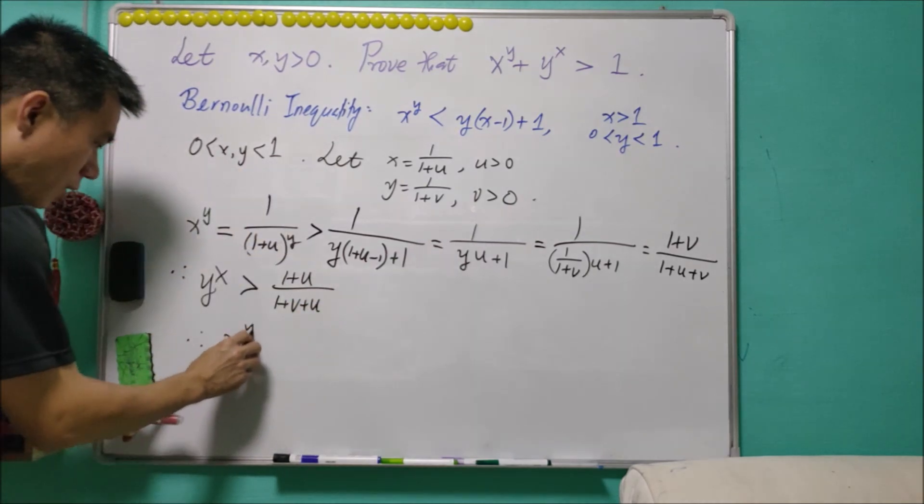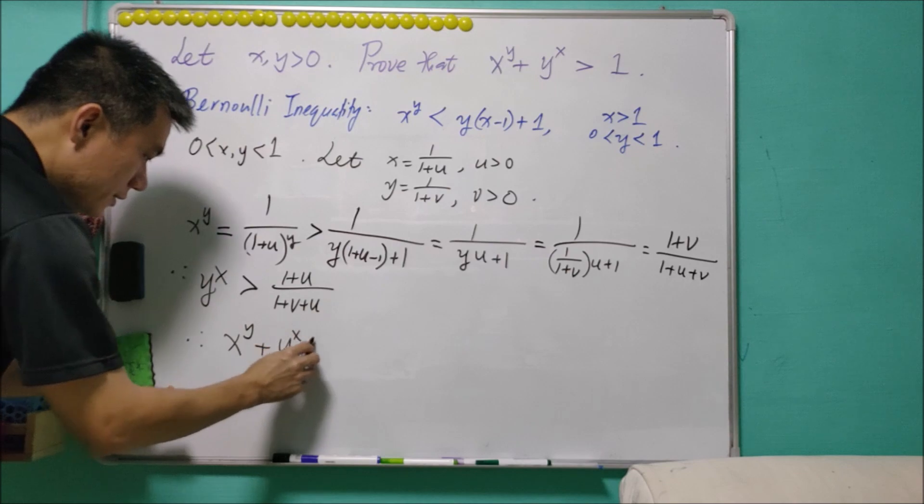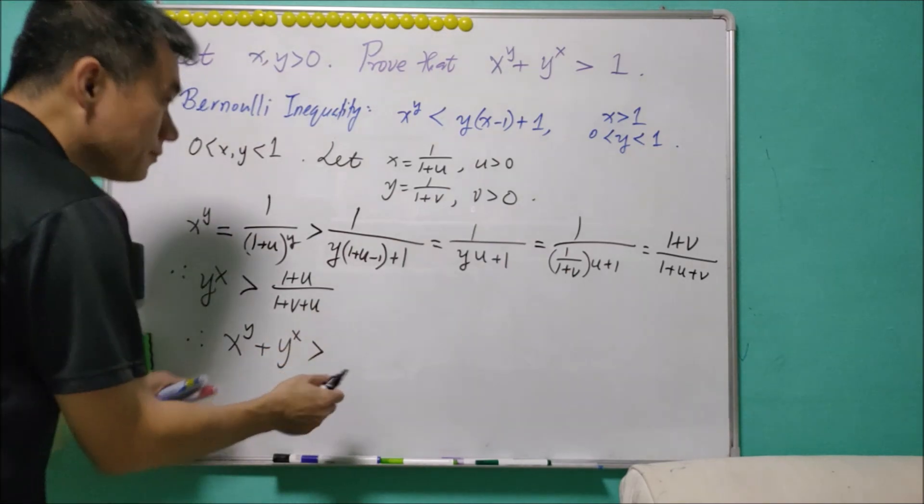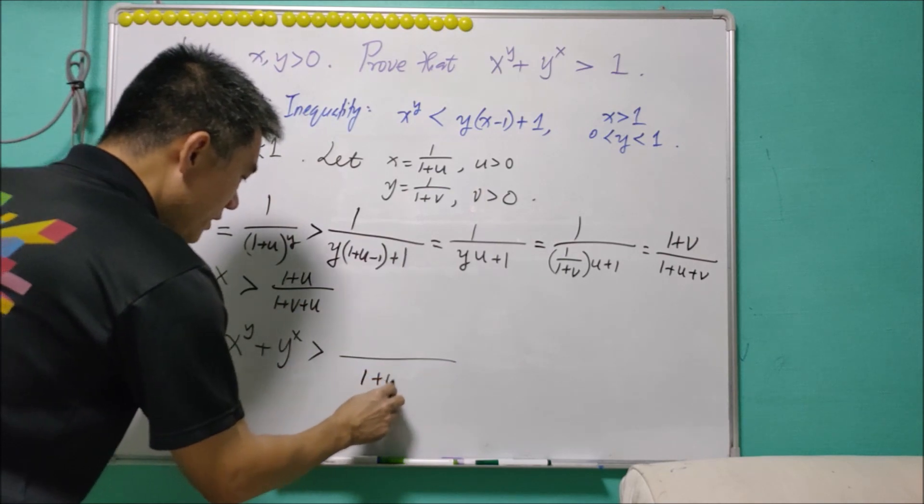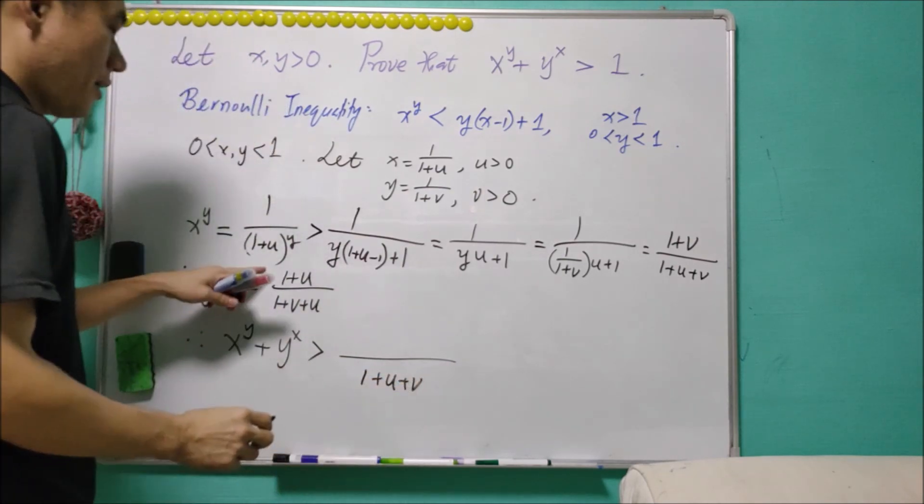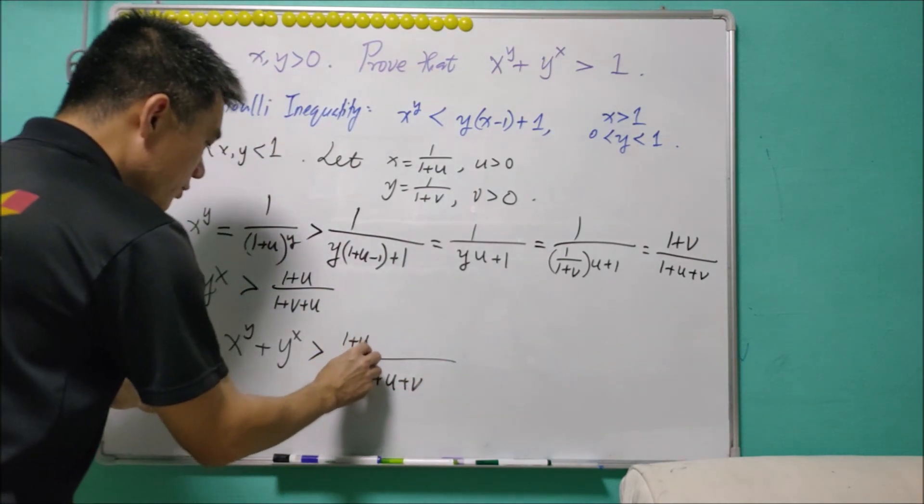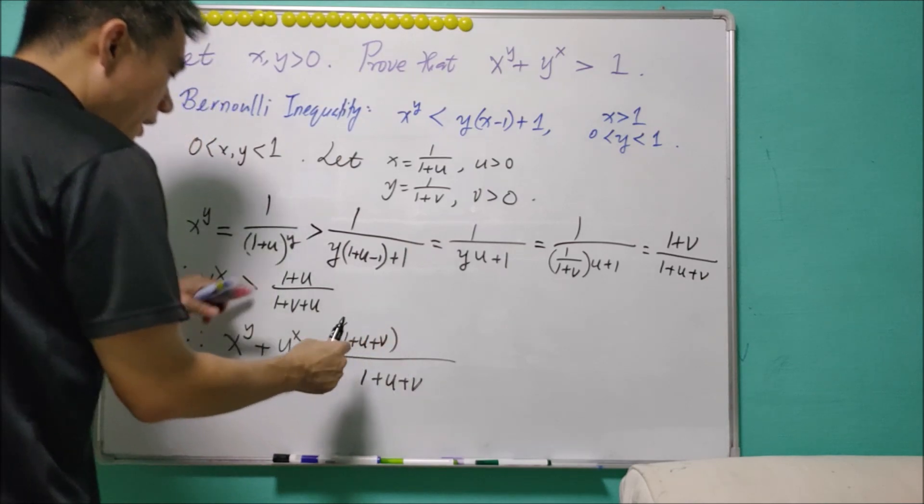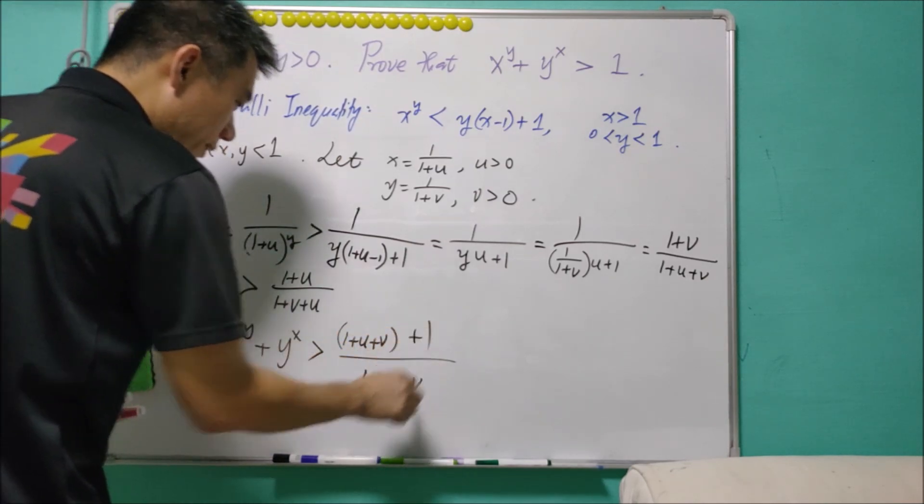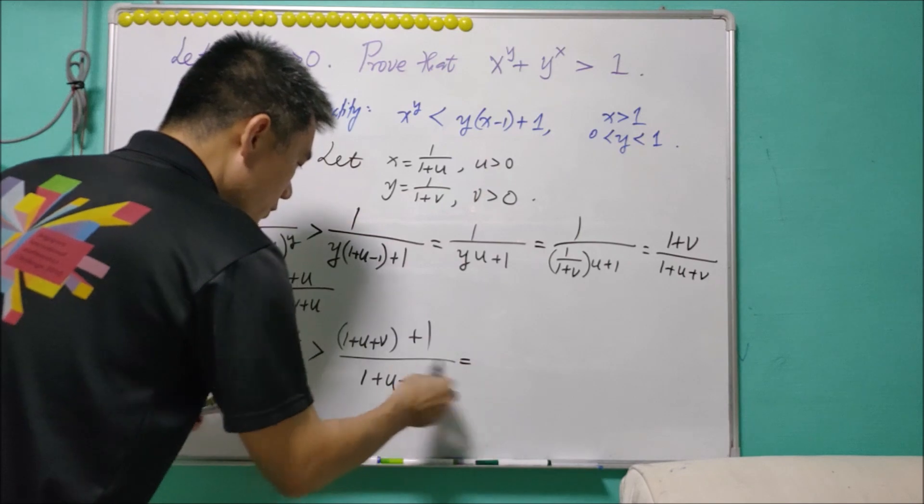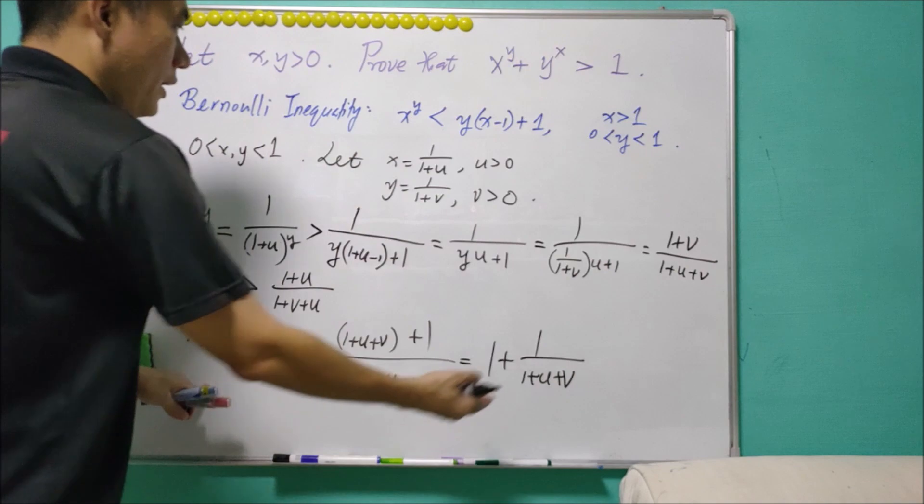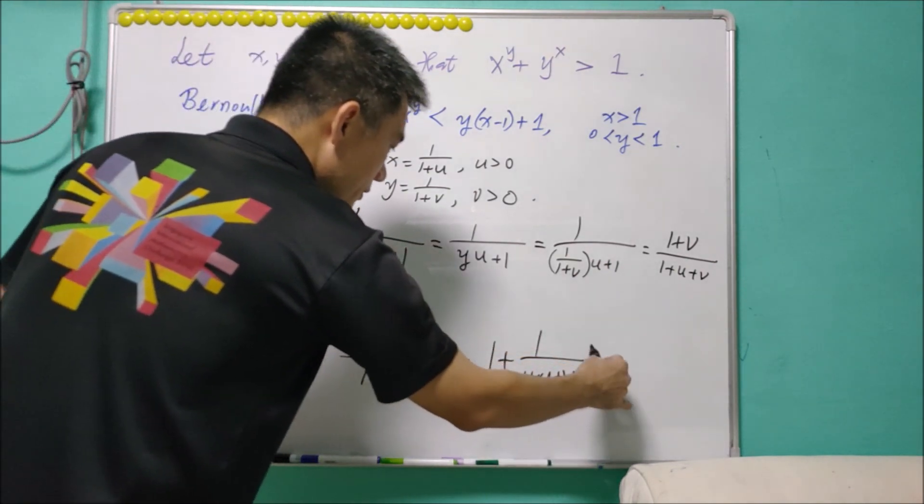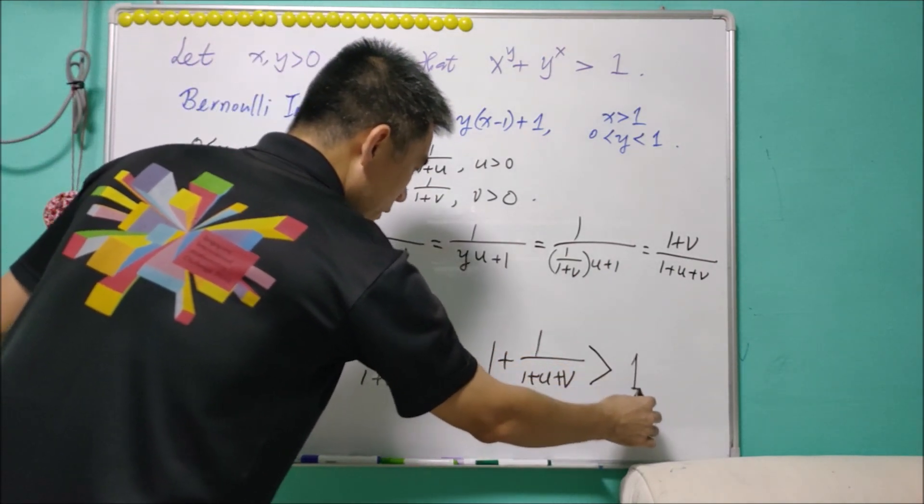And therefore, x to power y plus y to power x is greater than... we sum up these two terms. They have the same denominator. And for this, it is 1 plus u plus v. And we'll have extra 1. And this is equal to 1 plus 1 over (1 plus u plus v). And since u and v are positive, this is greater than 1.